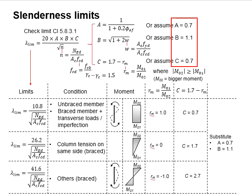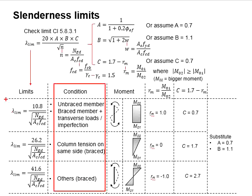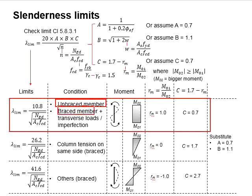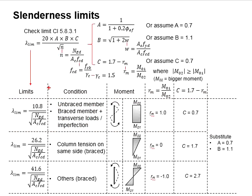Different conditions of the column will lead to different degrees of slenderness limit. The first one is referring to an unbraced member or unbraced member with transverse load or imperfections. The limit is the smallest among all.